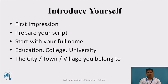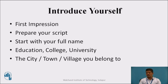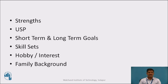You need to prepare your script for this particular answer, and once you prepare the script you can rehearse it. When writing your script, start with your full name, then include your education, college and university. You can also mention the city, town or village you belong to, your strengths, and your USP — that is, unique selling proposition. After that, include your short-term and long-term goals, your skillsets, your hobbies or interests, and your family background.